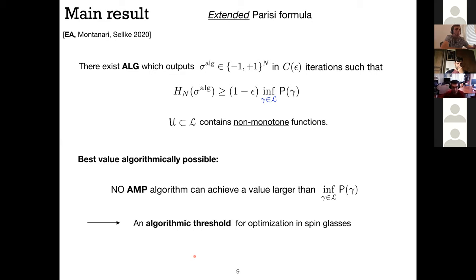It turns out that this algorithm is best possible among a class of AMP algorithms. So I'll define that in a second. When you try to look at all these algorithms, then the best value that is achieved by them is given by this variational problem. Okay, so this is an algorithmic threshold for optimization in spin glasses.